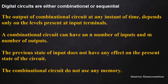In simple words, a combinational circuit generates output based on the current input, but a sequential circuit generates output based on current input plus previous state. In this video we focus on combinational circuit design; in coming videos we will discuss various sequential circuits. A combinational circuit can take n number of inputs and generate m number of outputs. The previous state of the input does not have any effect on the present state of the circuit.